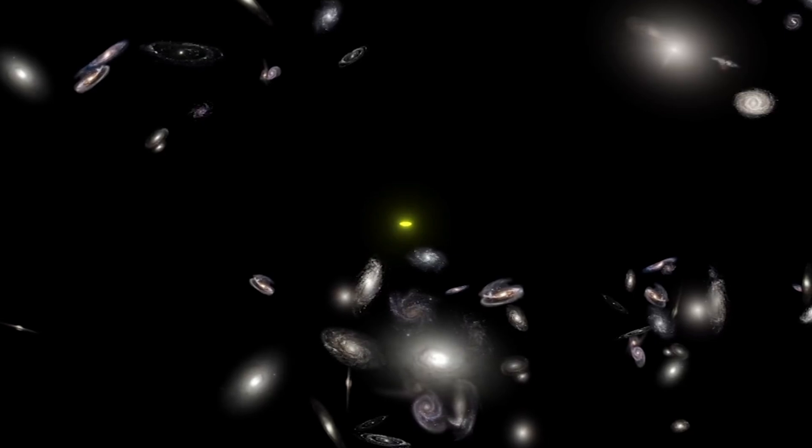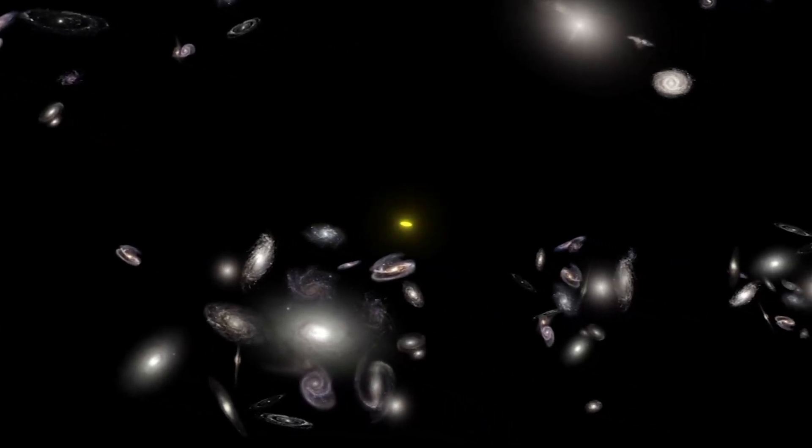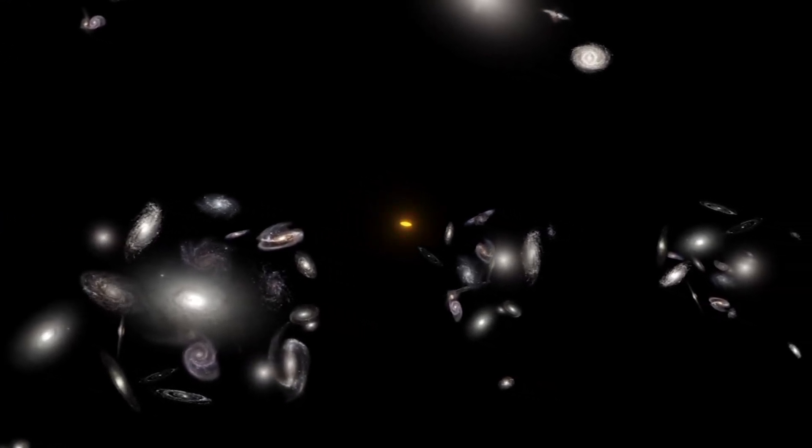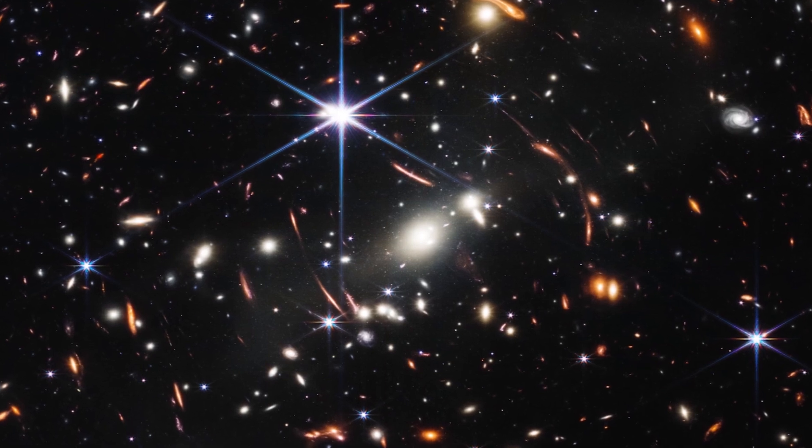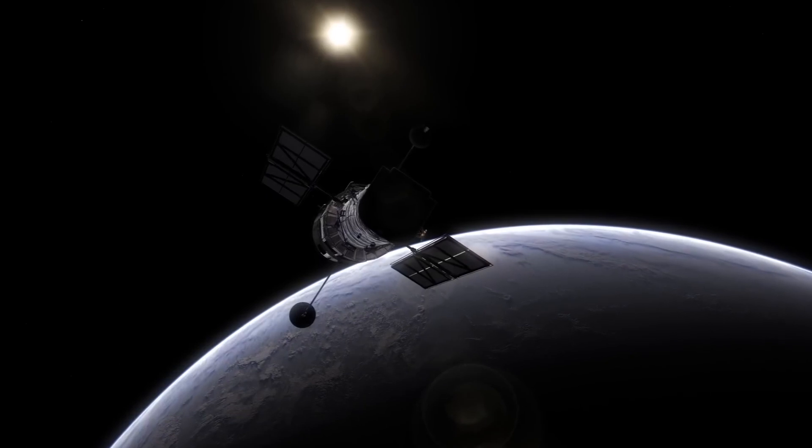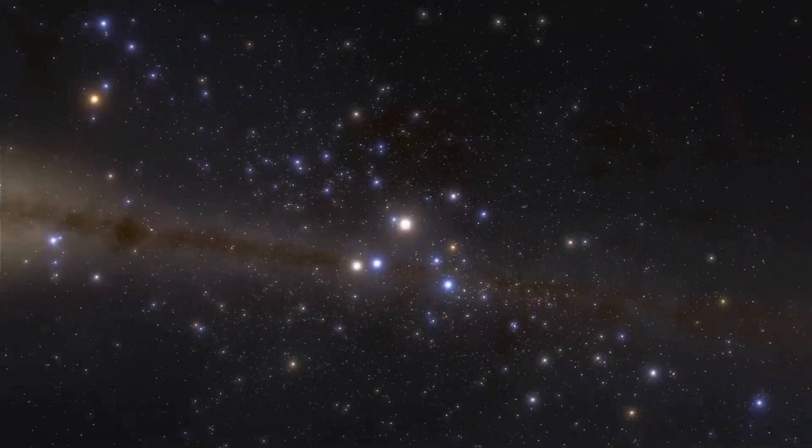The galaxies captured in these images appear to be too small, smooth, old, and numerous compared to the predictions of the Big Bang Hypothesis. The fact that the observed galaxies are two to three times smaller than similar galaxies imaged by the Hubble Space Telescope completely defies the expected behavior in an expanding universe.